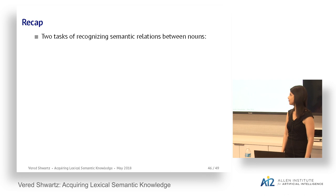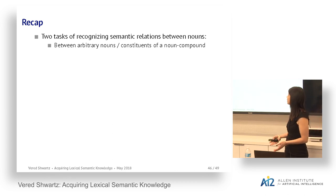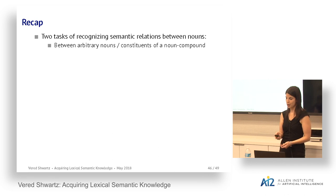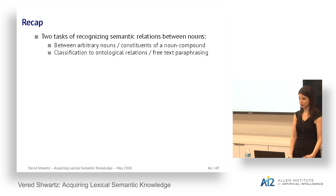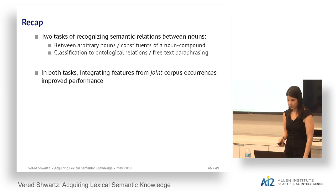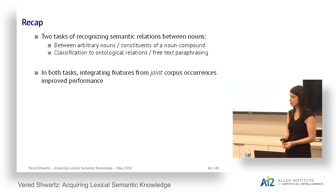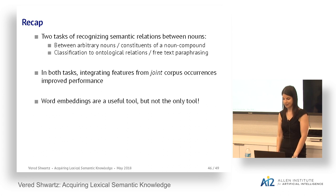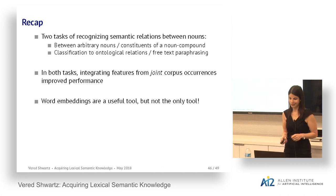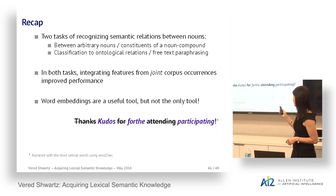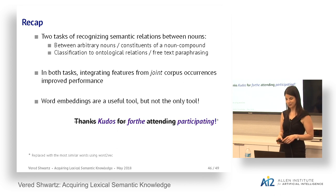To recap, I presented two tasks for recognizing semantic relations between nouns. One is between arbitrary words, framed as classification to ontological relations. The other is between constituents of a noun compound, framed as free-text paraphrasing. The main takeaway from both works is that when we integrate features based on joint corpus occurrences, we can improve performance especially on more challenging evaluation settings. Word embeddings are a useful tool, but they're not the only one — you should always consider using more information sources.